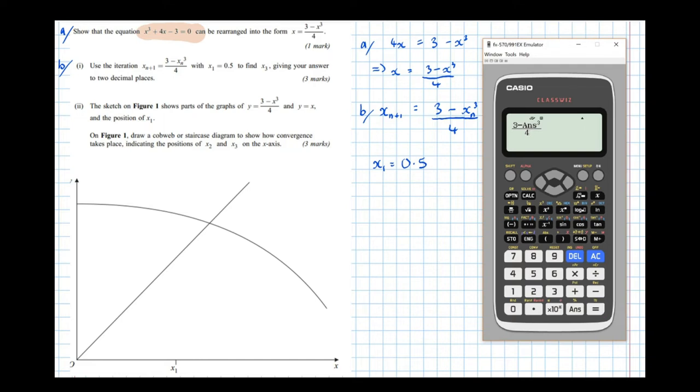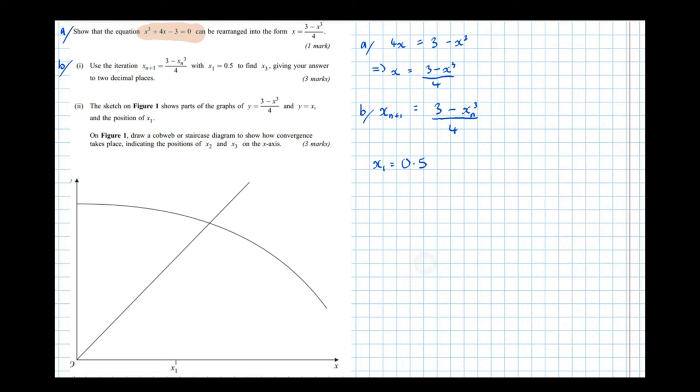And we press equals, we get the next iterate, the next term in the sequence. So x2 is 0.71875. x2 equals 0.71875.